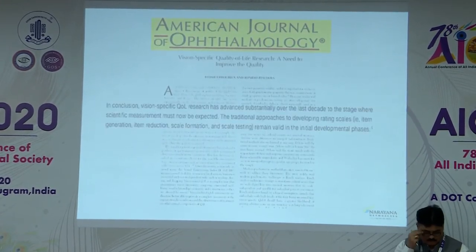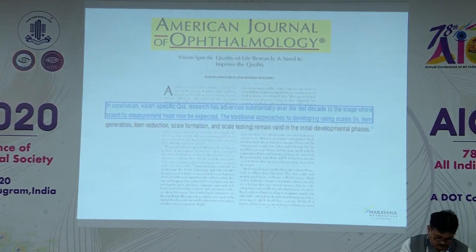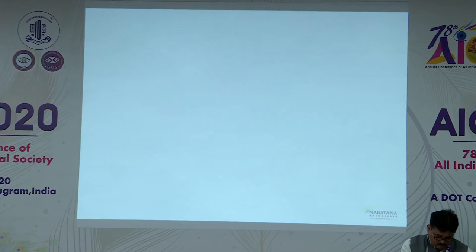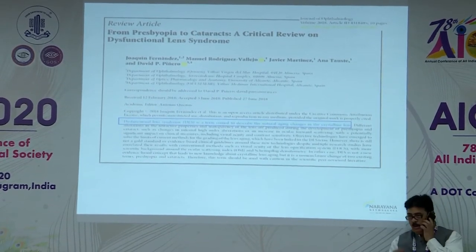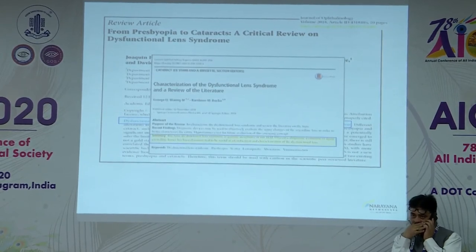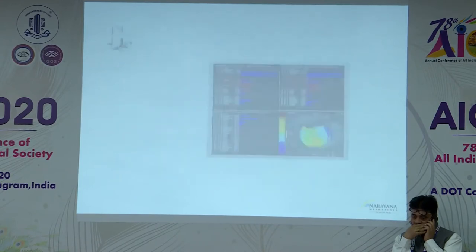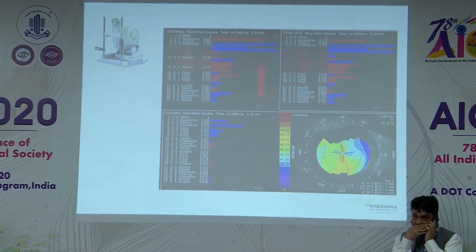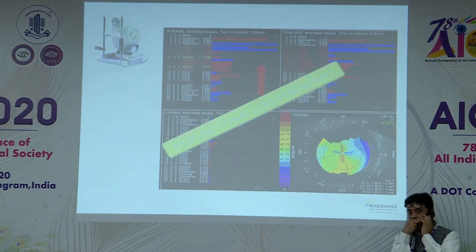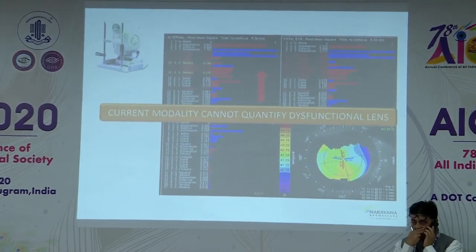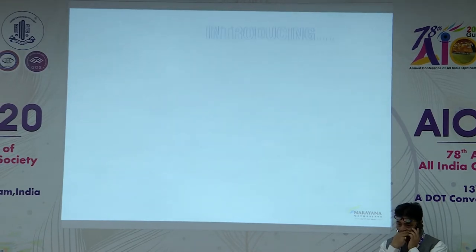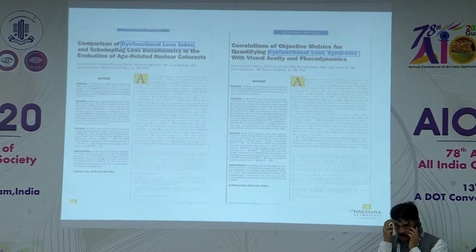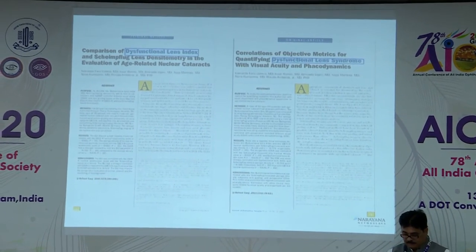The American Journal of Ophthalmology published that vision-specific quality of life research gives traditional approaches to developing rating scales. Dysfunctional lens syndrome has already been coined as terminology to describe the natural aging changes in the crystalline lens. There is growing acceptability of objectively quantifying how much cataract has occurred. We have the DLI on the i-Trace, which gives internal and external aberrations separately. However, current modalities cannot quantify this dysfunctional lens — so are aberrations enough? Introducing the dysfunctional lens index on the i-Trace system.